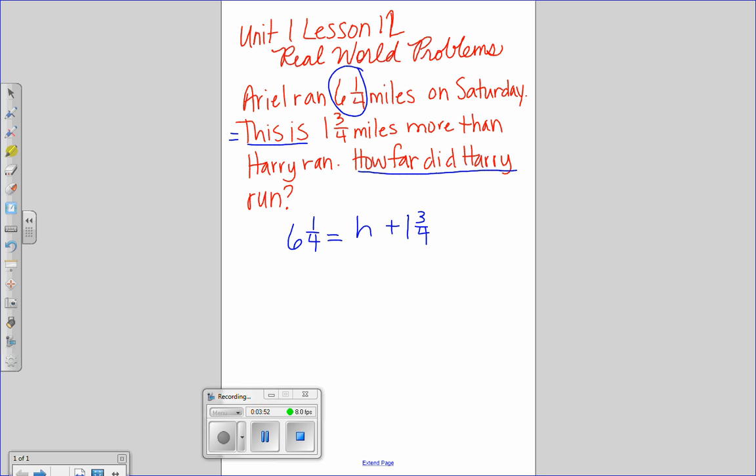How am I going to figure it out? Use the inverse operation. So, it's going to be H equals six and one quarter take away one and three quarter. So, we would call this the situation. This is what we know and this is the solution.